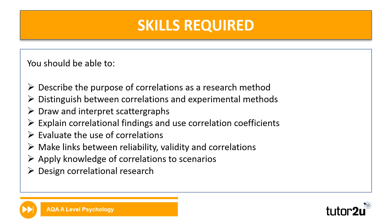Now, how does that translate in terms of the skills you're going to be required possibly to show in the examination? You will obviously be able to describe what the purpose of a correlation is as a research method — that's to say what it's actually for. You'll be able to give a couple of examples of differences between a correlation and an experiment. Not only will you be able to draw a scattergram, you also might be asked to interpret it — that's to say, explain what it shows. You'll look at different correlational findings and use correlation coefficients to explain the findings of research.